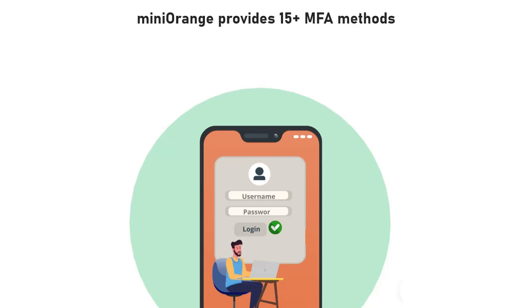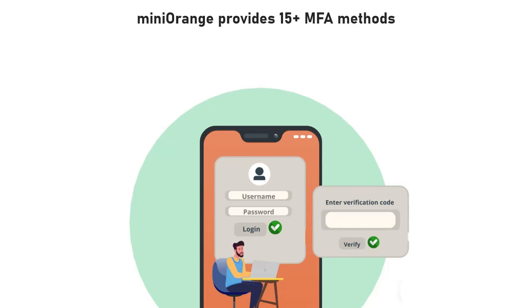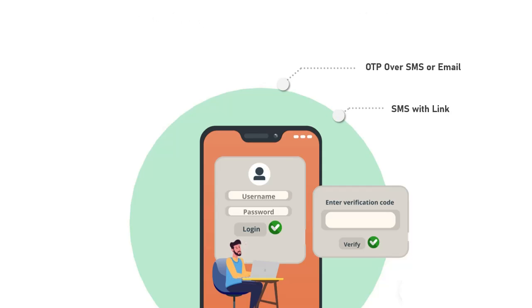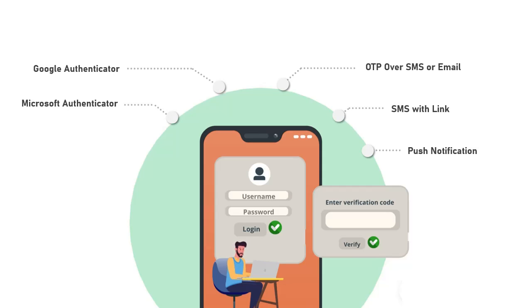Mini Orange provides 15 plus MFA methods like OTP over SMS or Email, SMS with Link, Push Notifications, Google Authenticator, and Microsoft Authenticator.